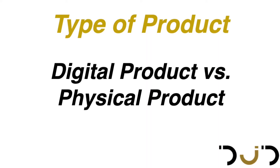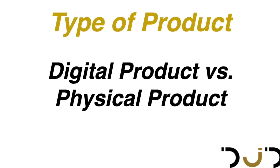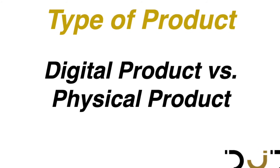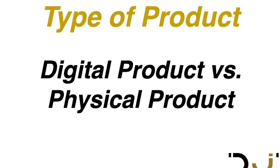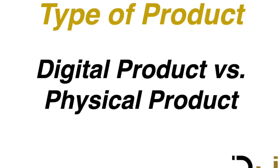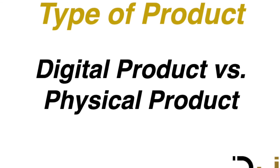The second thing when we talk about online business is that there are usually two types of products. The first is a digital product, wherein there's no physical product that you need to deliver — it's all online. And then of course, the physical product, wherein there's something tangible that people can see.